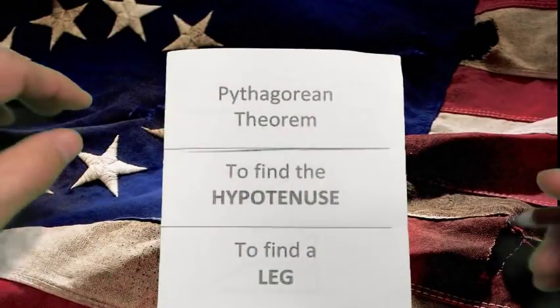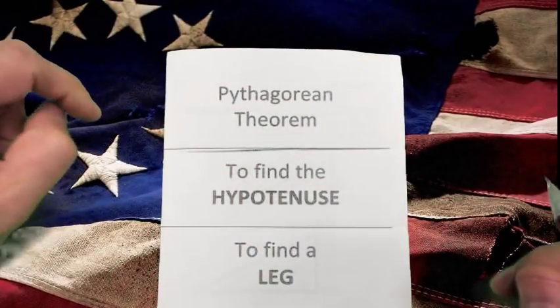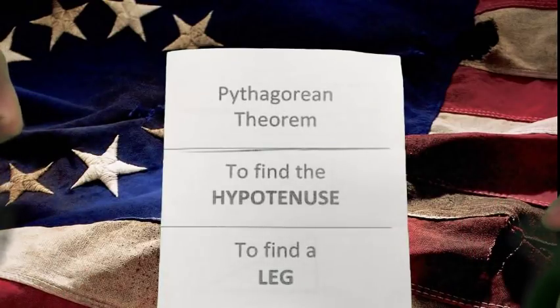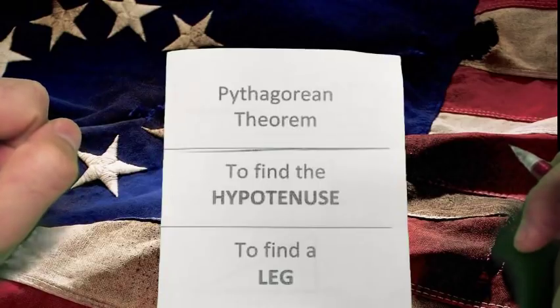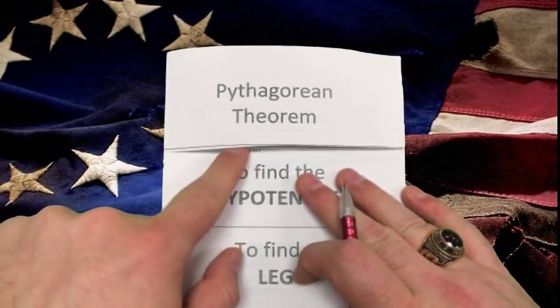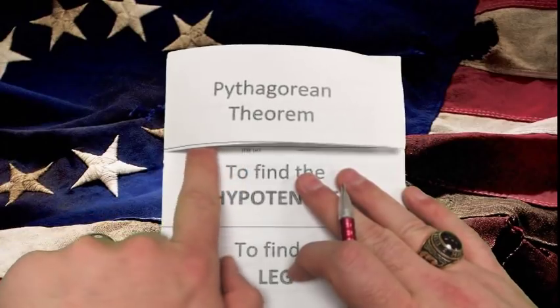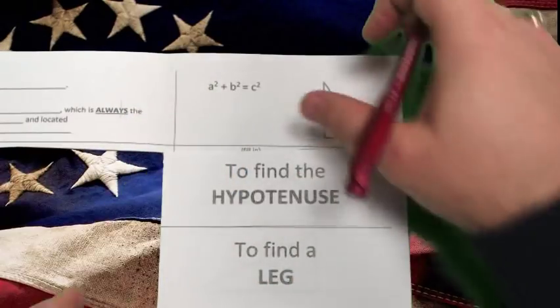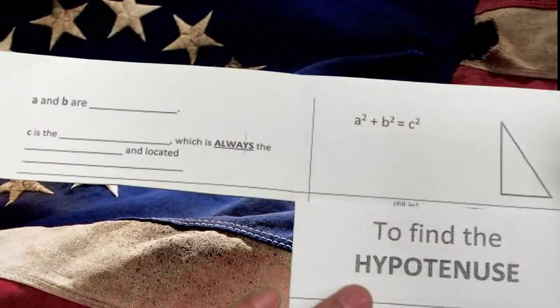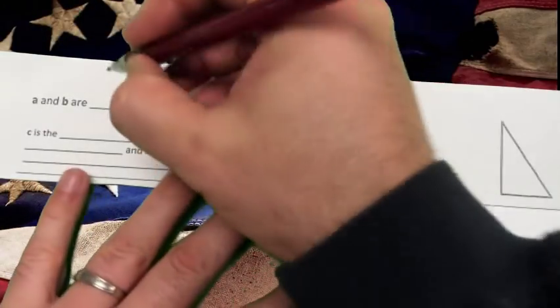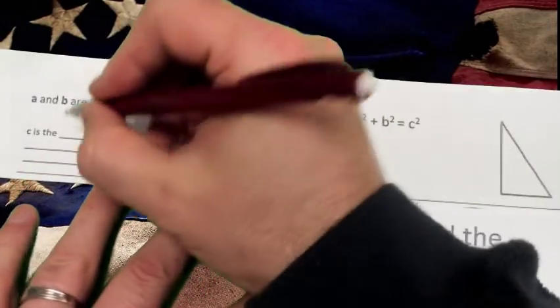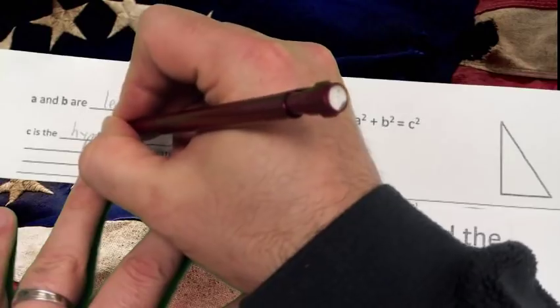Pythagorean Theorem is something you've studied before. We're going to incorporate our simplifying radicals techniques that we learned last time, and that way we're keeping that skill up. Instead of just converting it to decimals, we're going to be reducing our radicals. Everything in this unit needs to be in reduced radical form. So go ahead and open that up. Now, whenever you do Pythagorean Theorem, remember that A and B are always the legs, and C is always the hypotenuse.